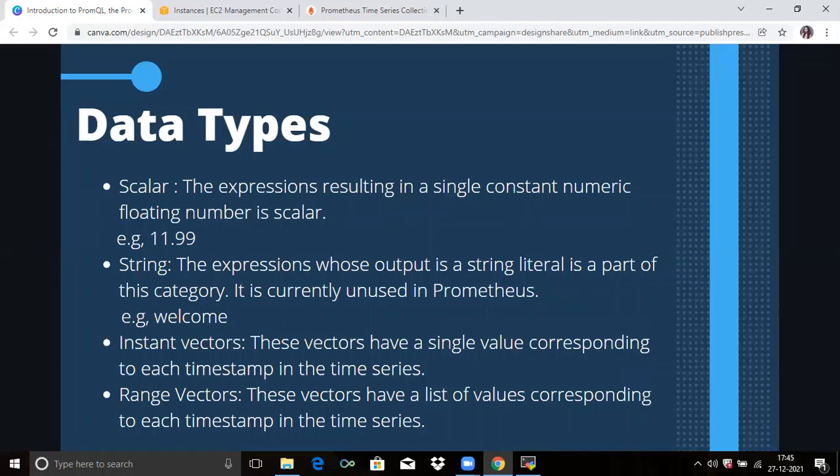Next is string. The string expression whose output is a string literal is a part of this category and it is currently unused in Prometheus. String is a simple string value without any labels. For example, 'welcome'. It is very rarely used and currently unused in Prometheus.